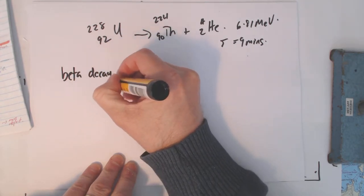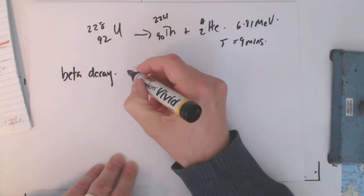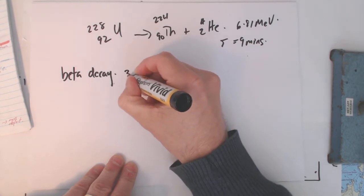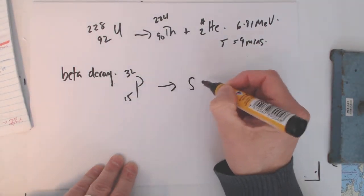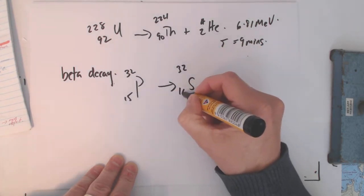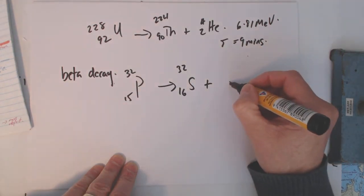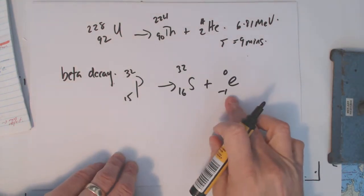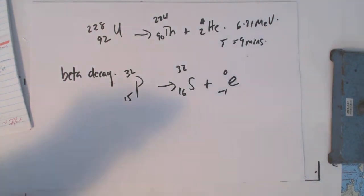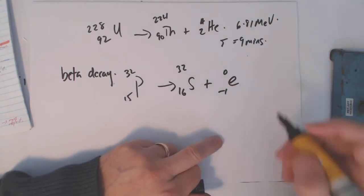This is beta decay, where we're looking at a phosphorus, 3215, I believe, goes to a sulfur, and it's 3216. The atomic number's gone up, so we know that this electron must be minus 1 in its atomic number. That's just a way of balancing the equation. This is a beta particle.